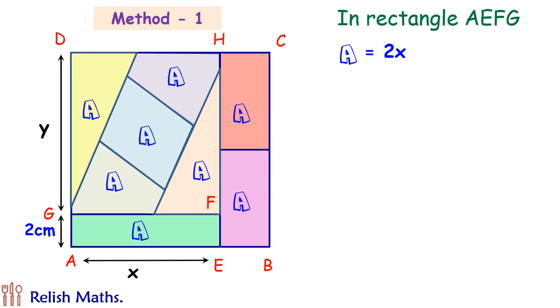Now let's take the bigger rectangle, that is AEHD. So this bigger rectangle has total 6 areas. So its area is equal to 6A. Also, its area is length into breadth, or (y + 2) into x.